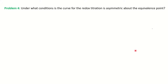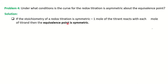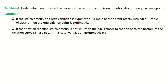The next question: under what condition is the redox titration curve symmetric about the equivalence point? Basically, if the stoichiometry of the redox titration is symmetric — meaning one mole of titrant reacts with one mole of analyte — then the equivalence point is symmetric. For example, in the iron and cerium reaction, cerium oxidizes Fe²⁺ to Fe³⁺ and is reduced to Ce³⁺. The stoichiometry of iron to cerium is 1:1, so you get a symmetric equivalence point.